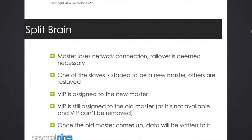So one of the slaves is picked up as a new master, the others are a slave to the slave, so the virtual IP is assigned to the new master, and we just find a standard failover process.